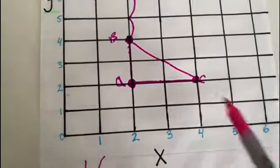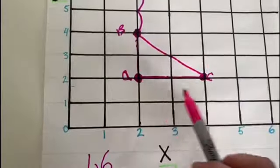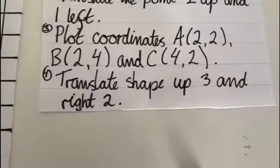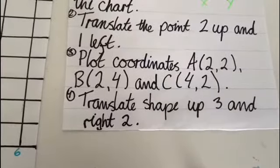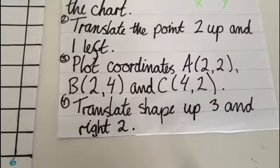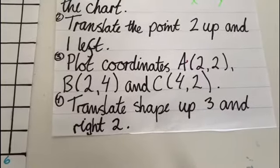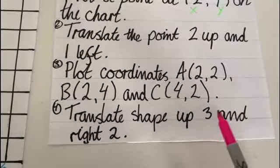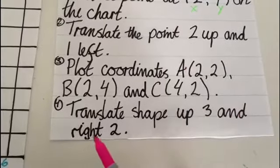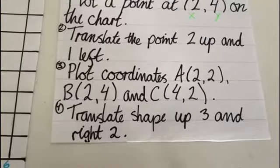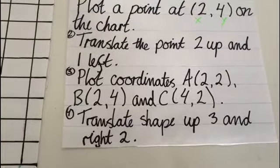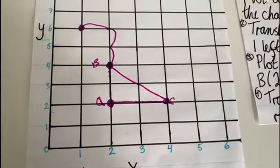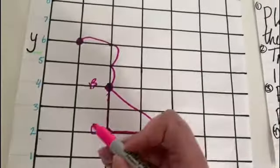Okay so now we have the three points that make up the triangle. Now when I'm going to translate the shape I have to translate every single point the same amount. So here it says translate the shape up 3 and right 2. So I have to make sure I'm doing this to every single point on my shape. We'll start with A.